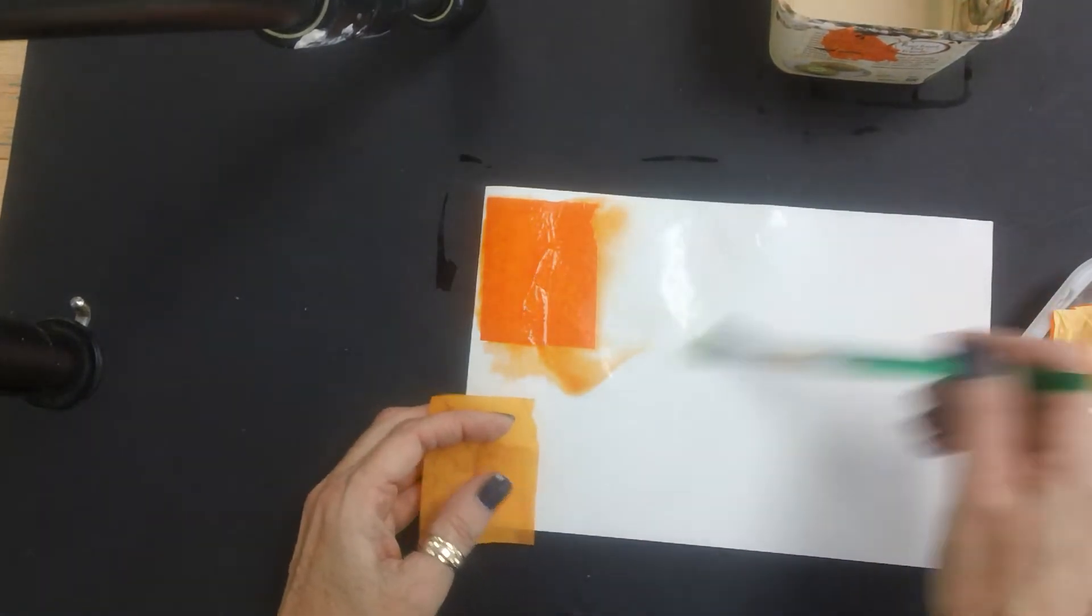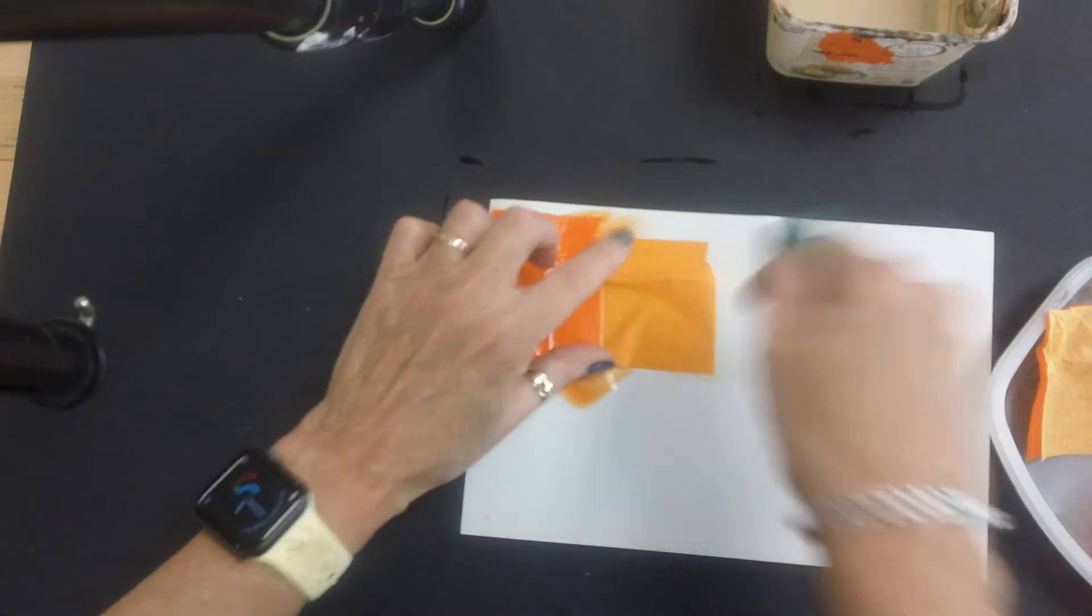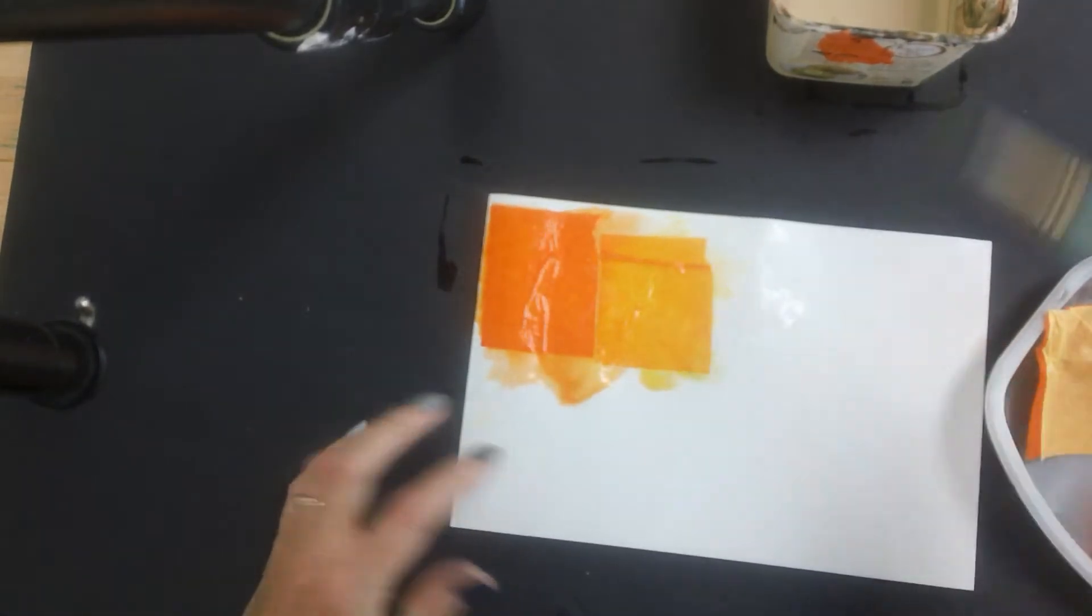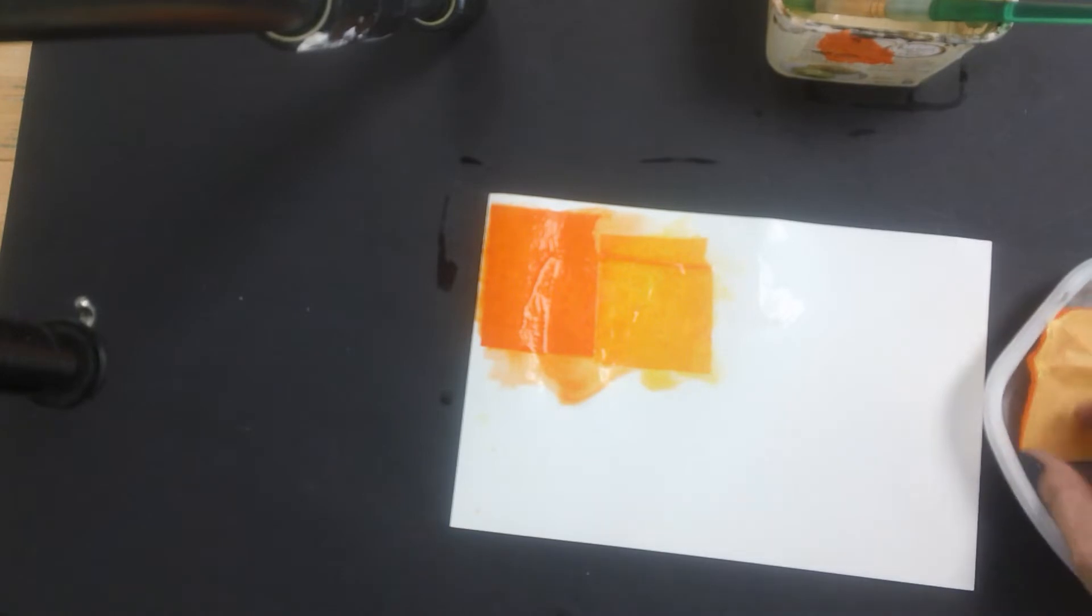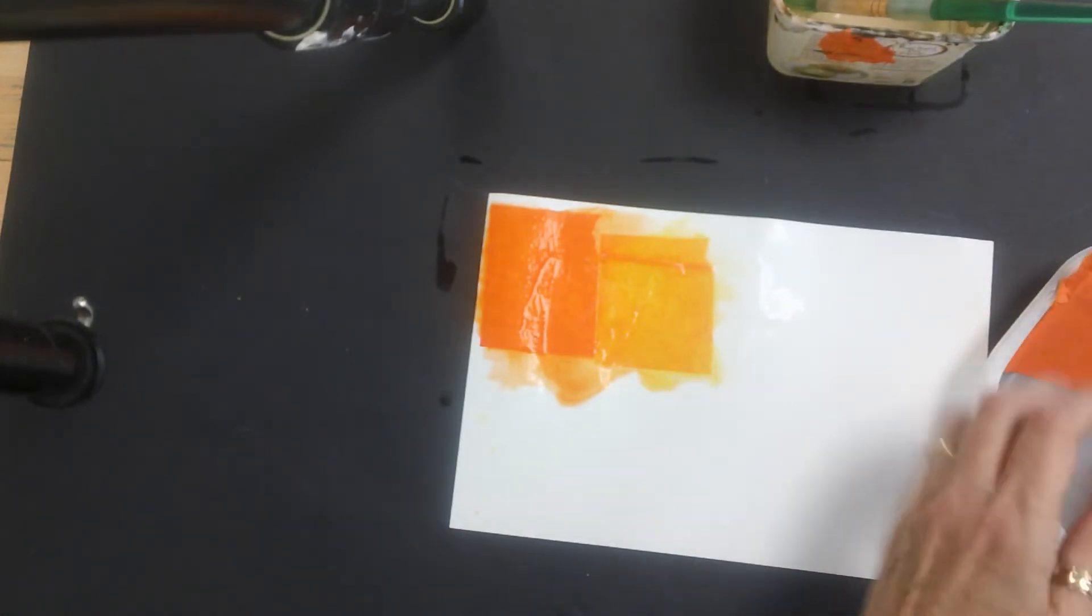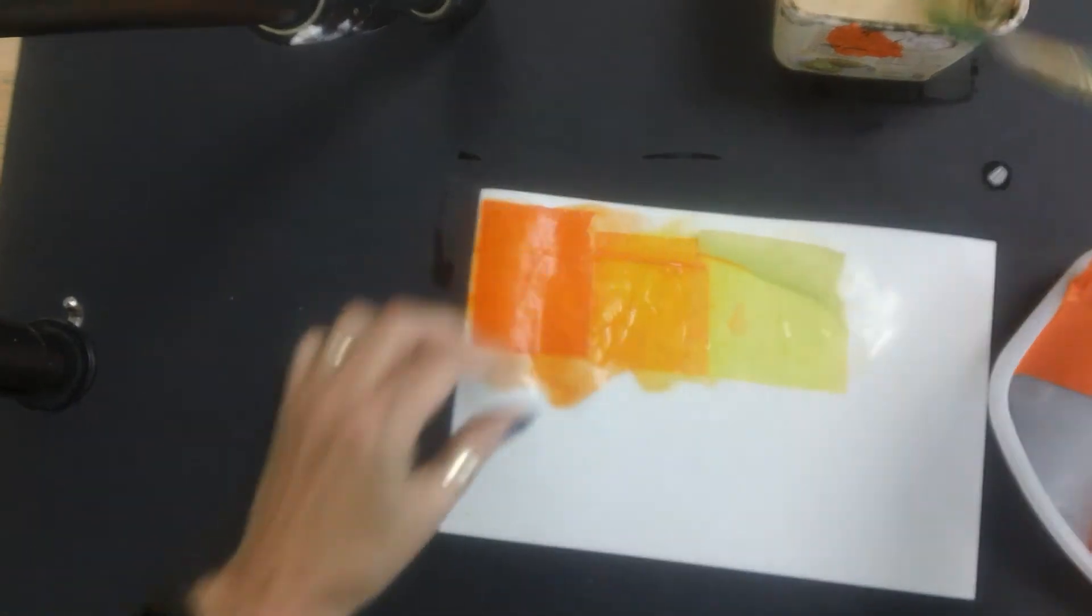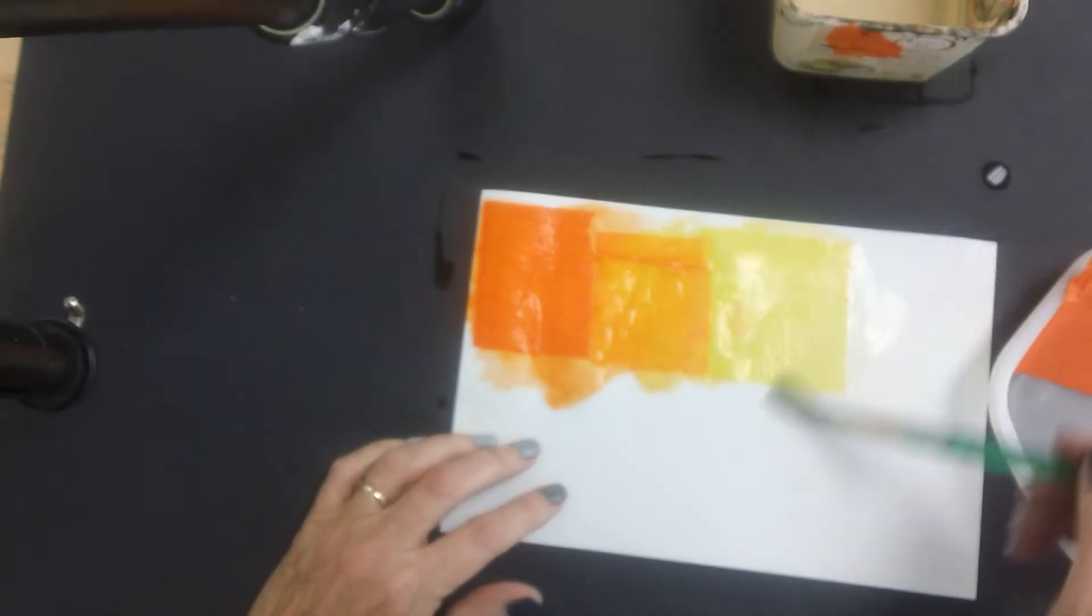So wet the paper, put the tissue down, oops, and wet the top of the tissue paper. And you're going to do that to fill up your whole paper. Just remember water, tissue, and then more water.